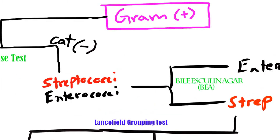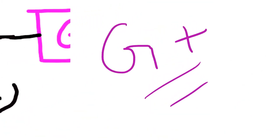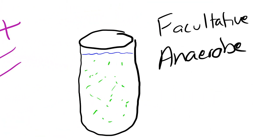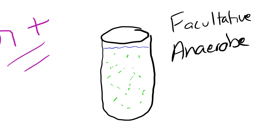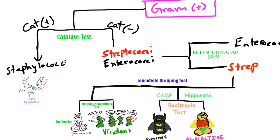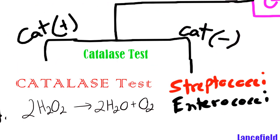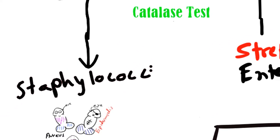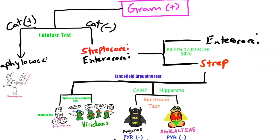Streptococcus pyogenes is a gram-positive streptococci and a facultative aerob, so they normally use oxygen but they can survive without it. It's catalase negative, meaning it can't break down hydrogen peroxide to water and O2. This test just distinguishes Staphylococcus from Streptococcus.